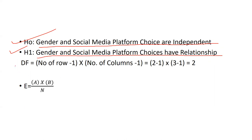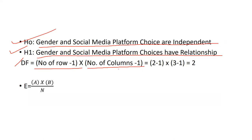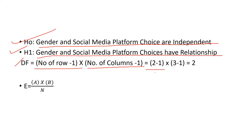Now we come to the degree of freedom. The formula is: number of rows minus one, multiplied by number of columns minus one. We have two rows — row one and row two — so two minus one. For columns, we have three (ignoring the total column), so three minus one. Therefore the degree of freedom is two.